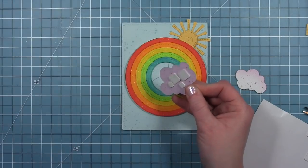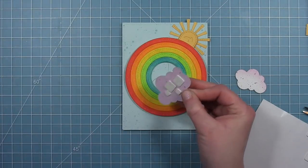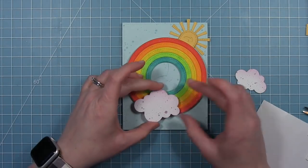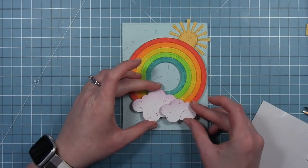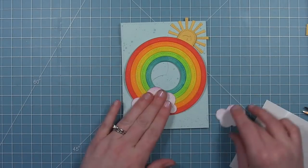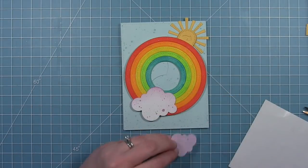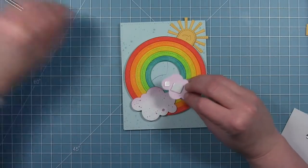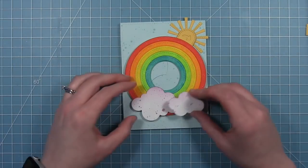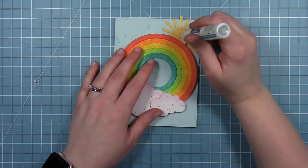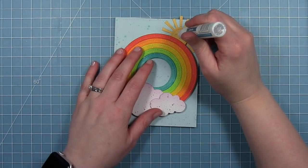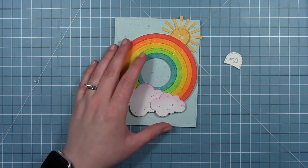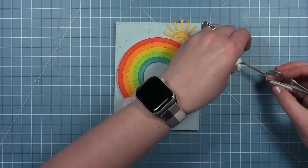So now I'm going to use some foam squares to pop this up a little bit off the rainbow and I'm just going to put these at the bottom. I just like the look of this rainbow being a complete circle. And I'm going to use thin ones and then I'm also going to use a thicker one so that this one's popped up just a little bit more. I used thin ones on the big one and I used a thin and a regular size foam square on the small one so that they're popped up from each other.